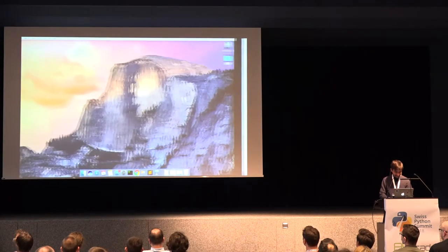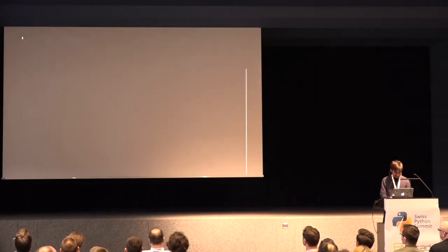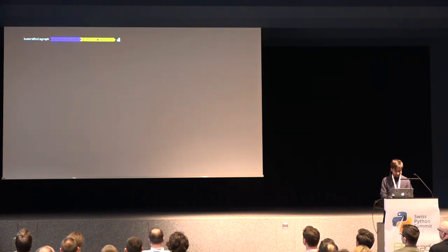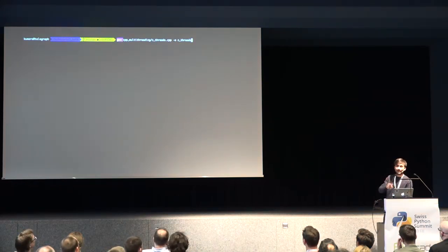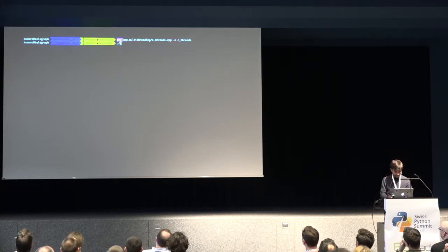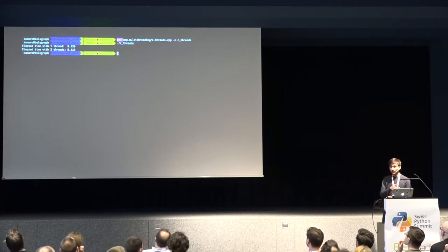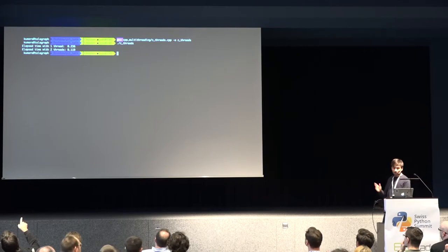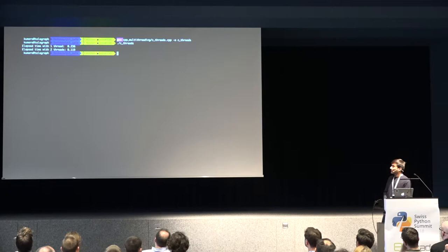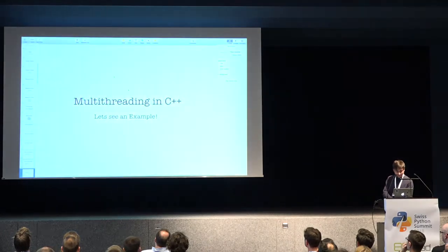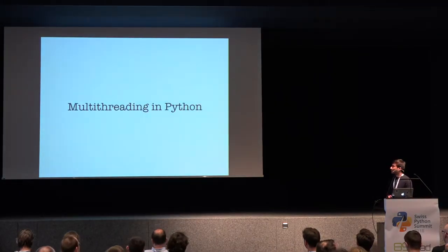Let's run it. I'm compiling — this code is in the GitHub repository I linked earlier. Now I'll run it. You can see the time elapsed with one thread is about 0.2 milliseconds, and with two threads it's almost half — very close to half. So that's how multi-threading looks in C++, and that's what you expect in a general programming language. Now let's see multi-threading in Python.